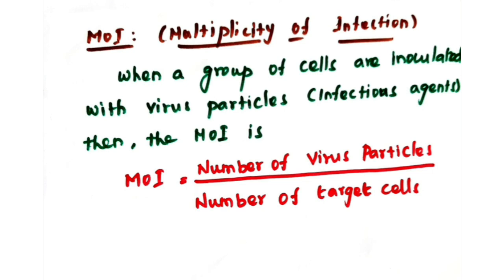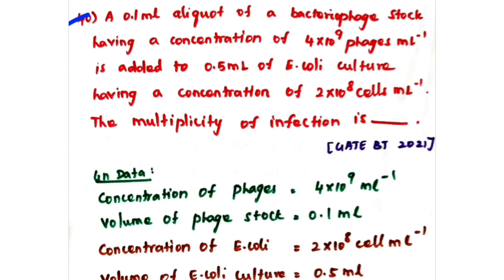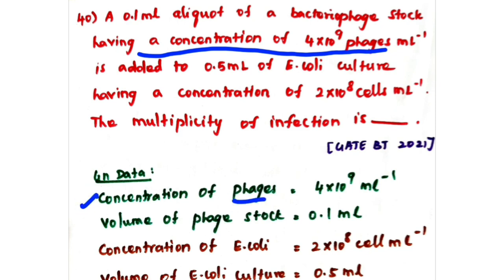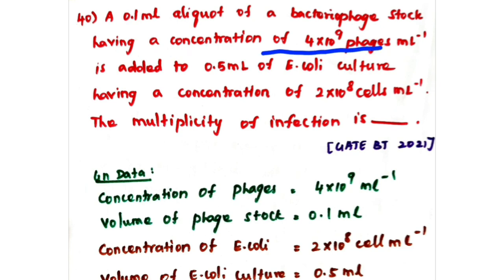Let's look at the problem. A 0.1 ml liquid of bacteriophage stock — so your volume of phage stock is 0.1 ml — having a concentration of 4 × 10⁹ phages per ml. So concentration of your virus particle, here bacteriophage, is 4 × 10⁹ per ml. This is added to 0.5 ml of E. coli culture, so your target cell is E. coli culture.